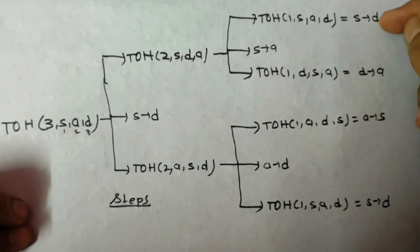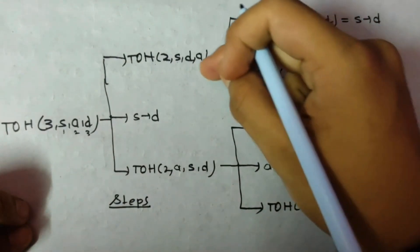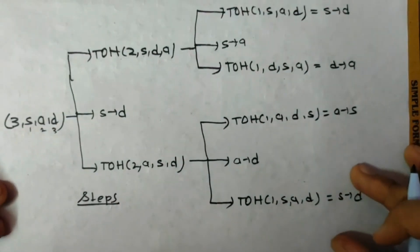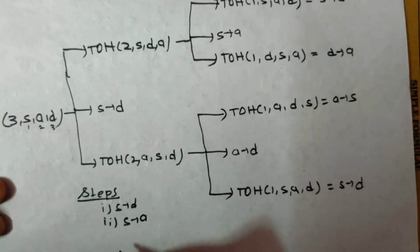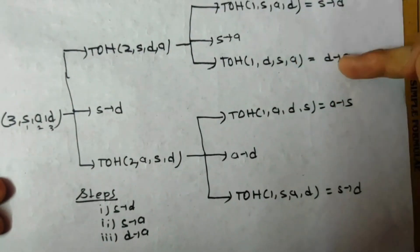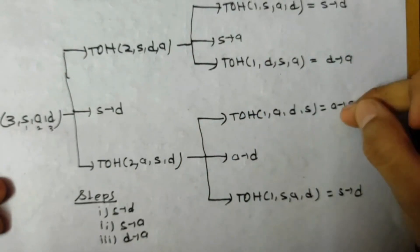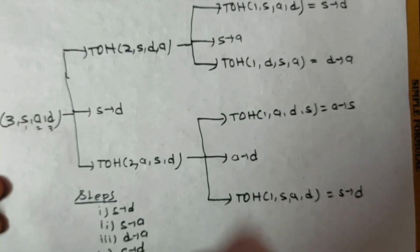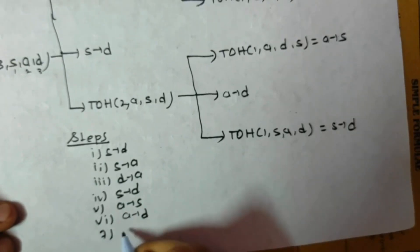Start from the top: first is S to D, then S to A, then D to A. Traverse down — S to D, then below that A to S, A to D. The steps in order are: 1st S to D, 2nd S to A, 3rd D to A, 4th S to D, 5th A to S, 6th A to D, and 7th S to D.